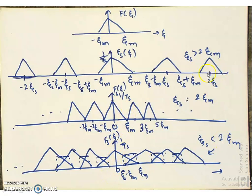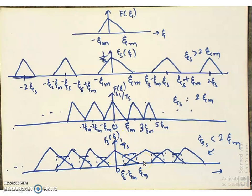When zeta_s equals 2·zeta_m, the guard band becomes zero — this is called the critical sampling case. The next case is under-sampling, when zeta_s is less than 2·zeta_m. Then zeta_s − zeta_m is less than zeta_m, and the side bands overlap with the baseband spectrum. The upper side bands mix with the baseband spectrum and the lower bands. This is an important concept called aliasing.